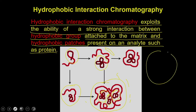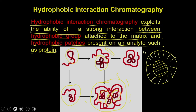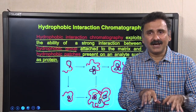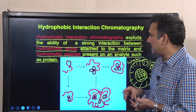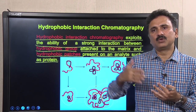The protein keeps hydrophobic amino acids in the center and hydrophilic amino acids at the periphery, because the outside is an aqueous environment — meaning water molecules are present outside. That is why all polar and charged amino acids are present outside, whereas hydrophobic amino acids are present inside. The question then arises: if hydrophobic amino acids are inside, how can they be available to make an interaction with the hydrophobic groups attached to the matrix?